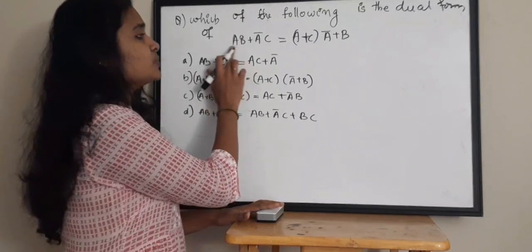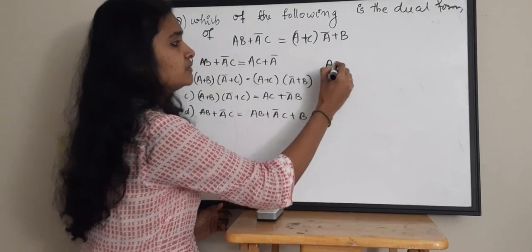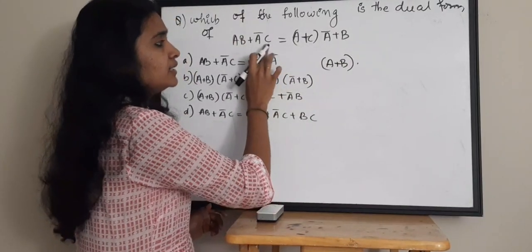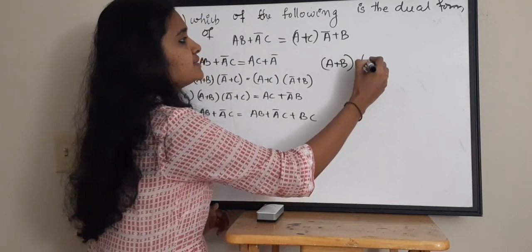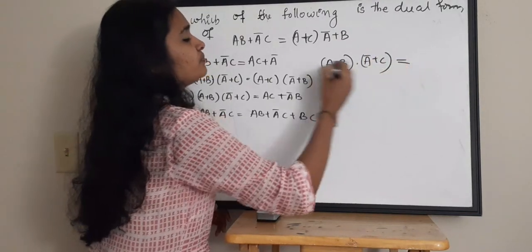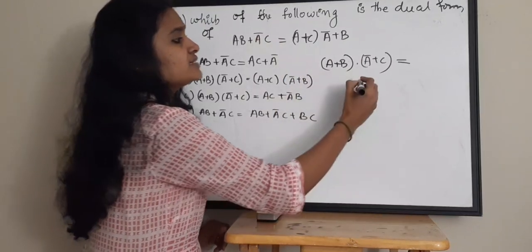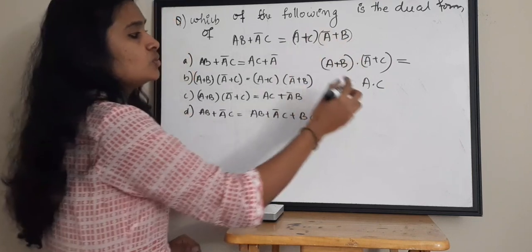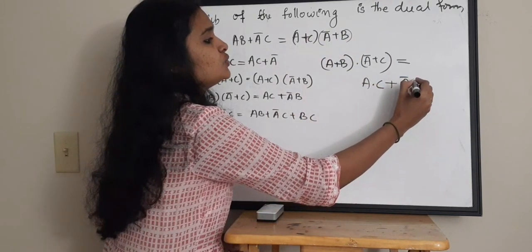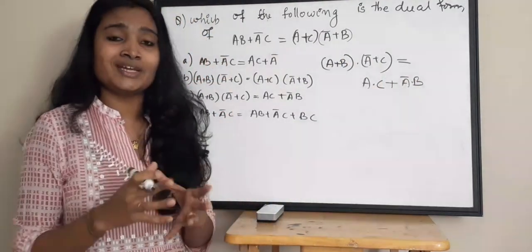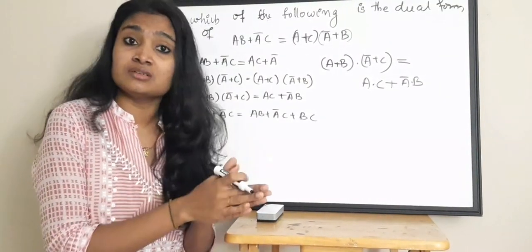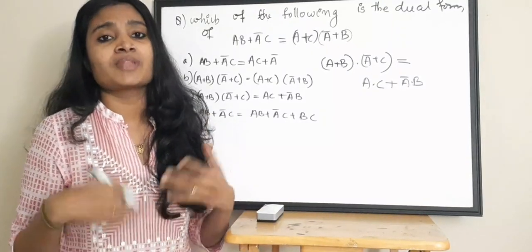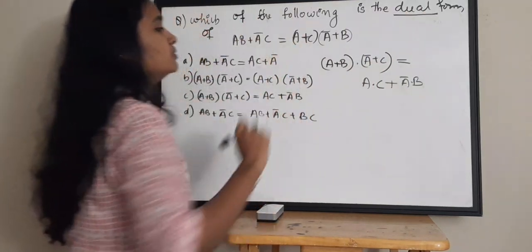So for this particular expression, if you want to find the dual form — here there is a product term AB, so it is converted as A plus B. There is a sum, so it is converted as a product. Again a product term A-bar C is converted as a sum A-bar plus C, and the sum term A plus C is converted as the product A into C. So simply, convert all summation terms as product terms and all product terms as summations — that is AND gates converted to OR gates and OR gates converted to AND gates.